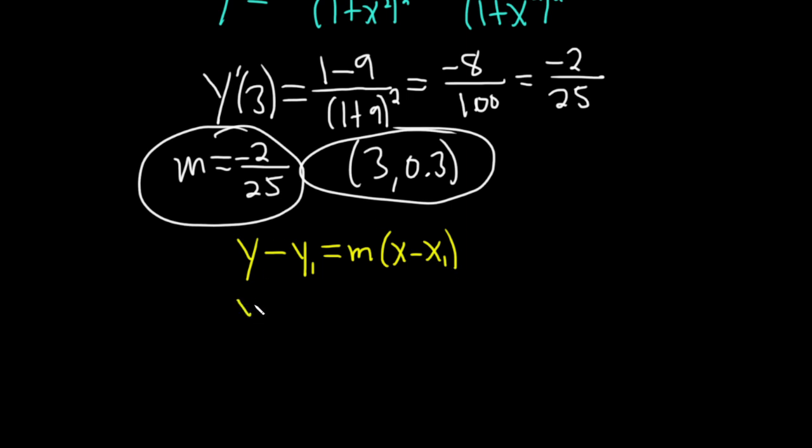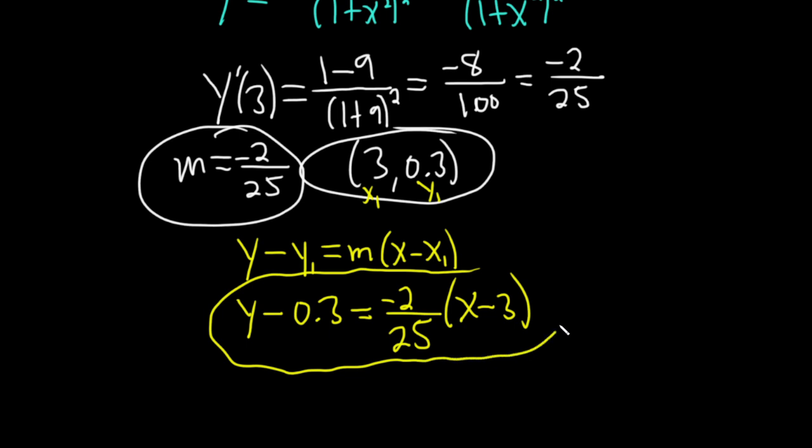So this is y minus—this is y₁ and this is x₁—so it's y - 0.3 = -2/25 times (x - 3). And I'm just going to leave it like this. I'm not going to solve for y because the numbers are not very fun. That would be the final answer. I hope this video has been helpful to someone. Good luck.